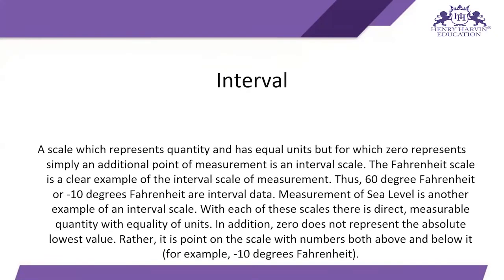Next comes the interval scale. When we have to provide some range in our dataset, those range numbers come under the interval scale of measurement. For example, when measuring sea level height, we use interval scale to show how much interval the sea level is across. Importantly, zero here represents simply an additional point of measurement — zero is not the absolute zero value. Numbers can go below zero, like minus 10 degrees Fahrenheit, which is lower than zero but is not the absolute zero.